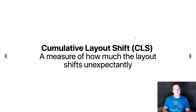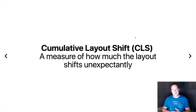Finally we have cumulative layout shift — a measure of how much your layout shifts unexpectedly. Sometimes you might have CSS that loads too late, or an image without width and height attributes accurately set, and this can cause a janky layout jump where the user might be reading content and suddenly the content jumps down and an image loads in its place. That's a poor user experience and definitely makes the user not enjoy using your website. So this is a really useful metric to capture.